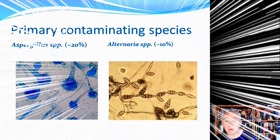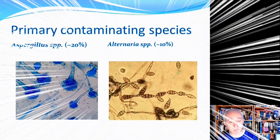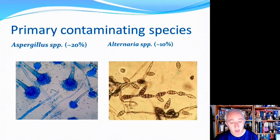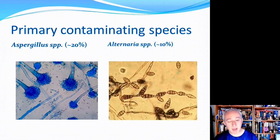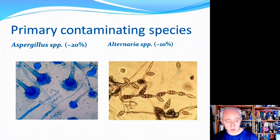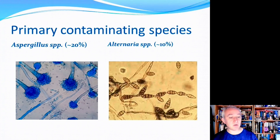Third most common in recalls is Aspergillus. Aspergillus species are common to most environments, and some species can cause particularly serious disease in humans through the production of mycotoxins called aflatoxins.